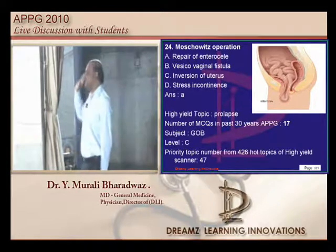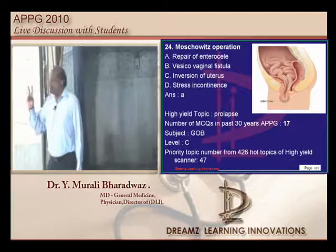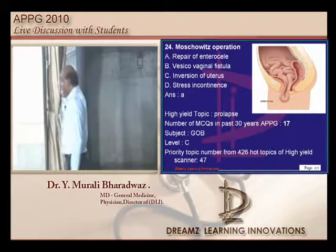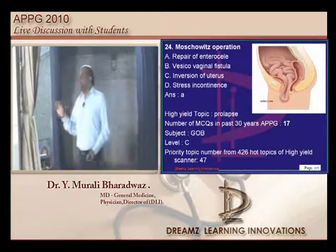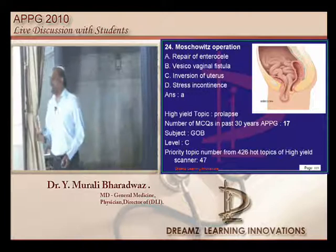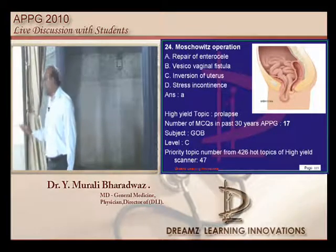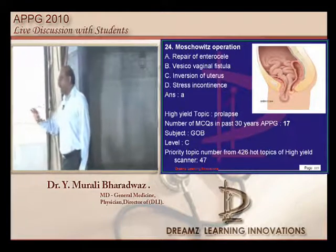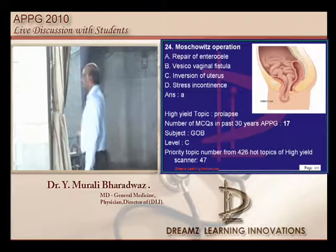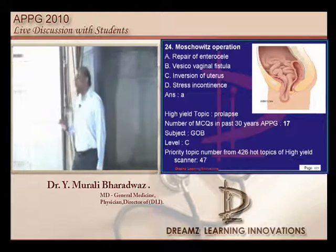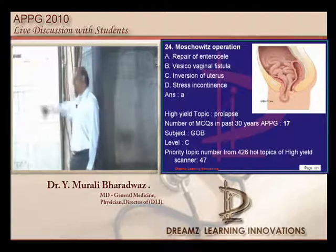What is the Moskowitz operation? There are two questions on prolapse — it is a favorite topic of the examiner. The Moskowitz operation is the repair of enterocele. The examiner usually asks about Shirodkar; this time he went with something like Moskowitz.